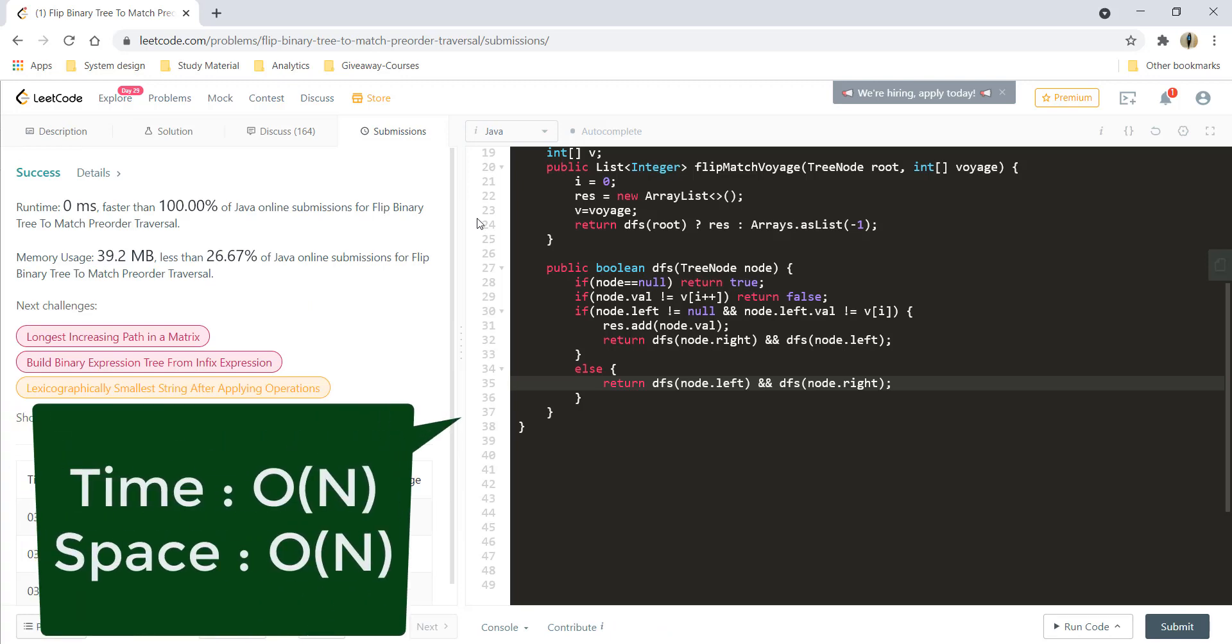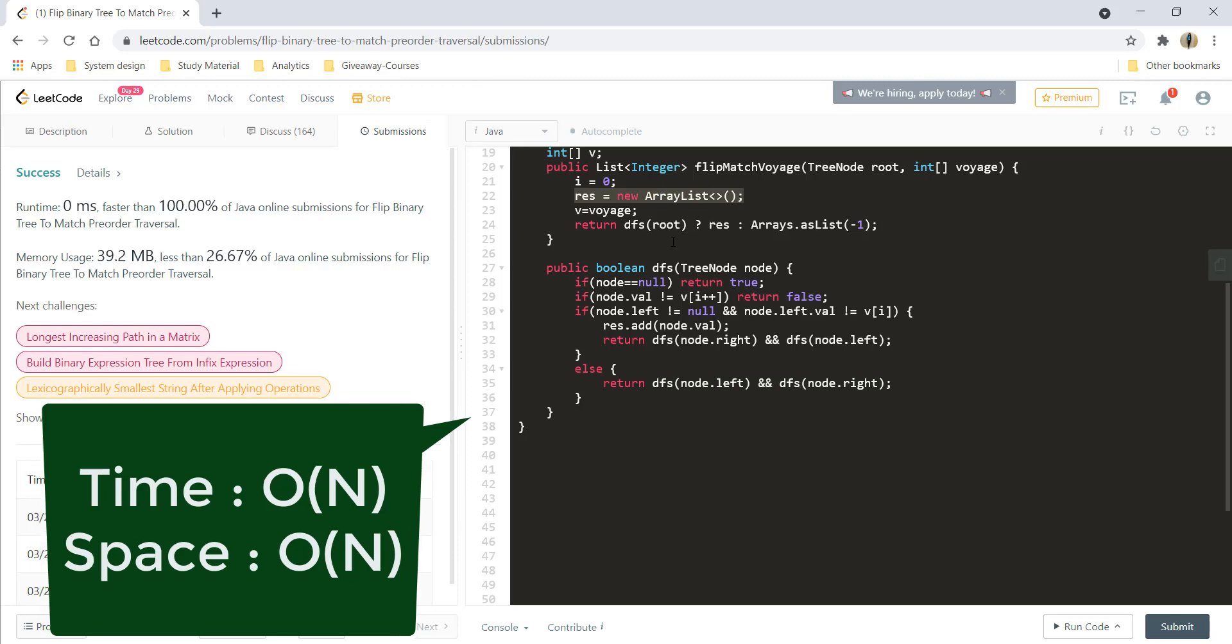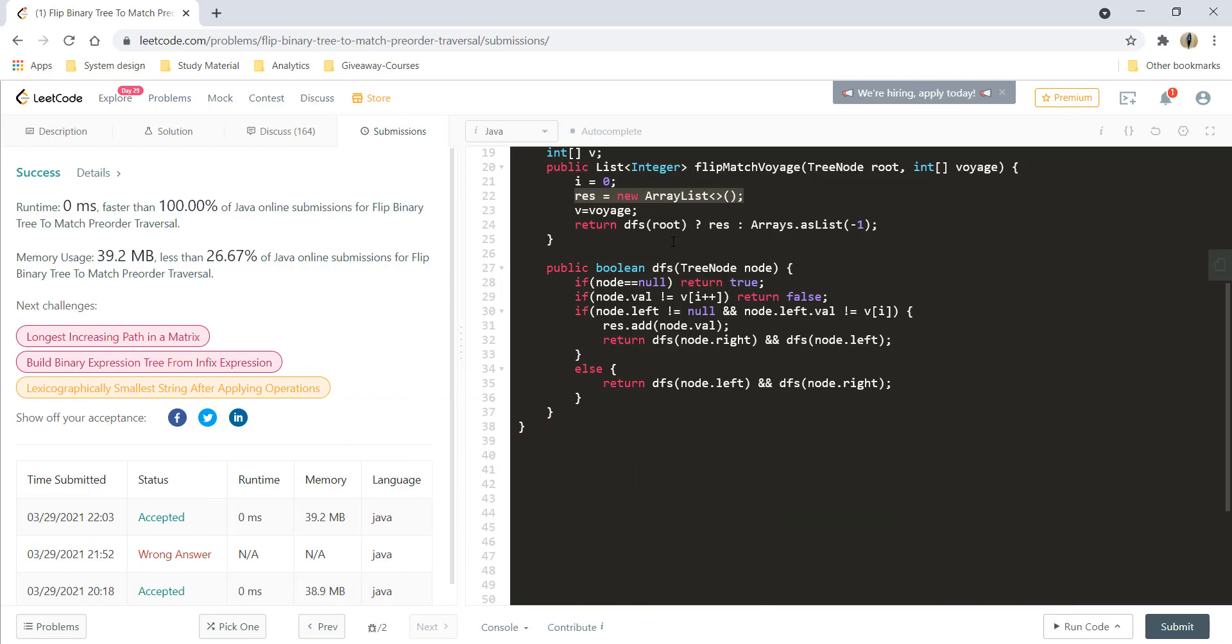Let's submit this and it got submitted. The time complexity over here would be O(N), going to each node, that is the number of nodes. The space complexity would be O(N) to store this array list that could go up to O(N). That's it for this question guys, I hope you like the video and I'll see you in another one, so till then keep learning keep coding, bye bye.